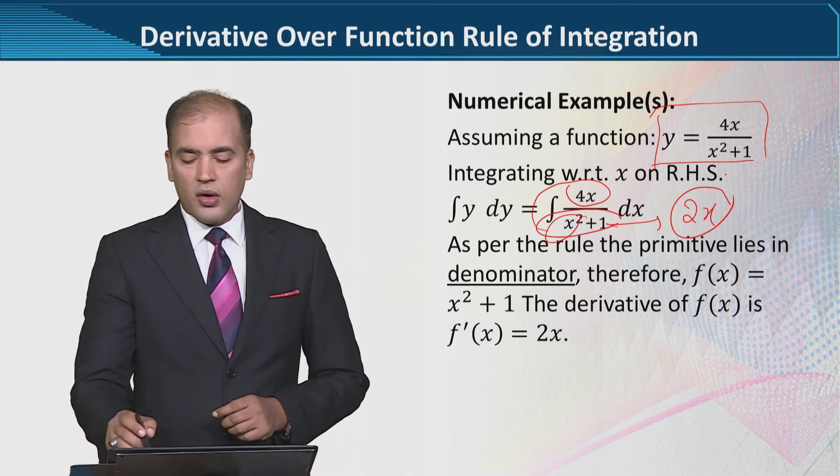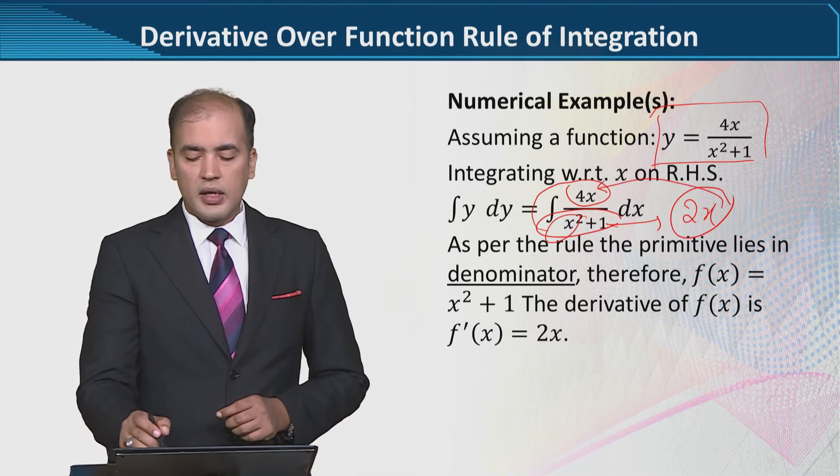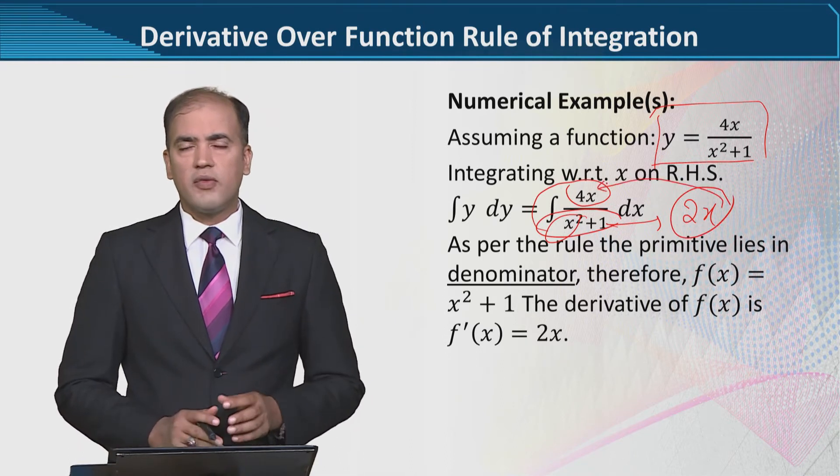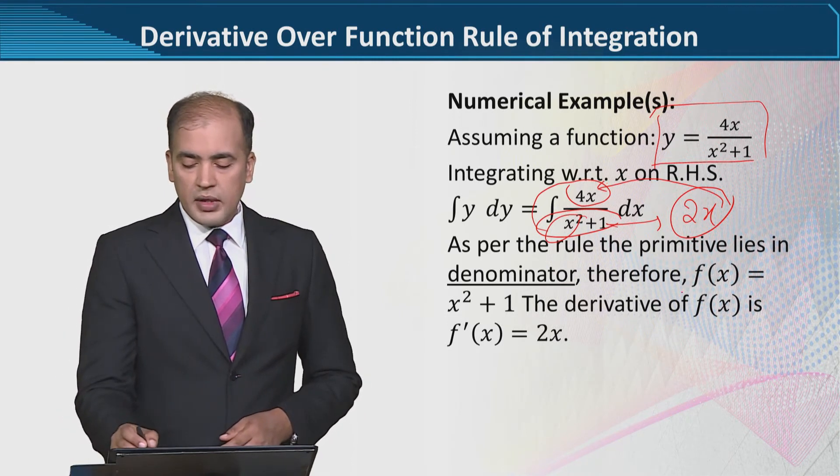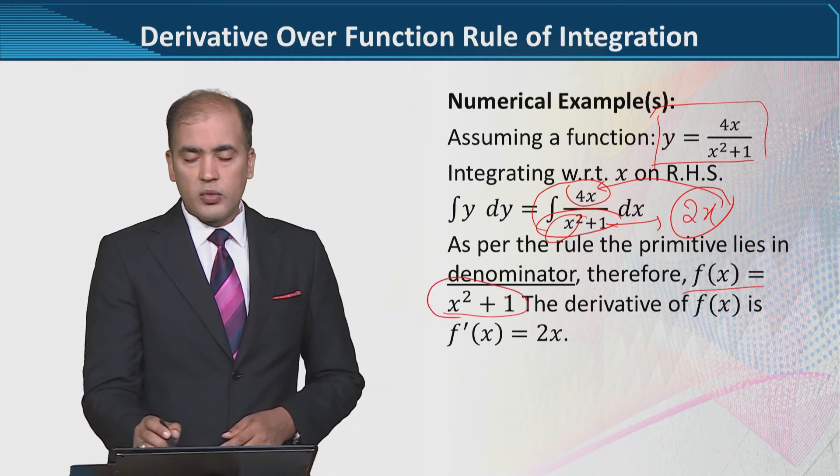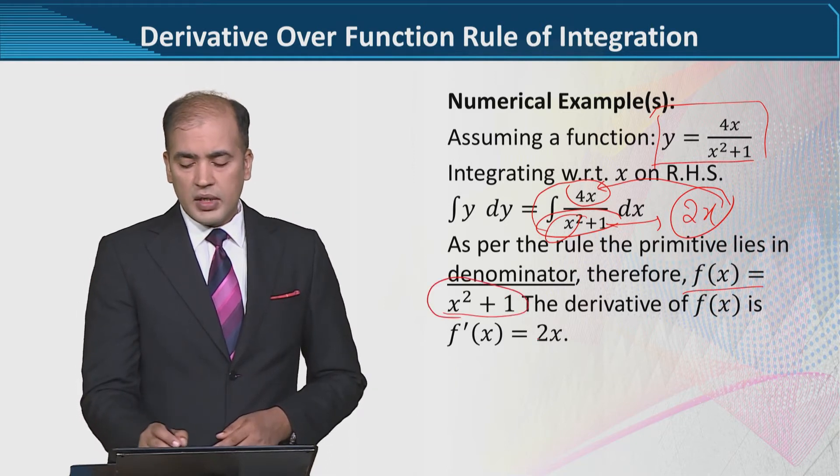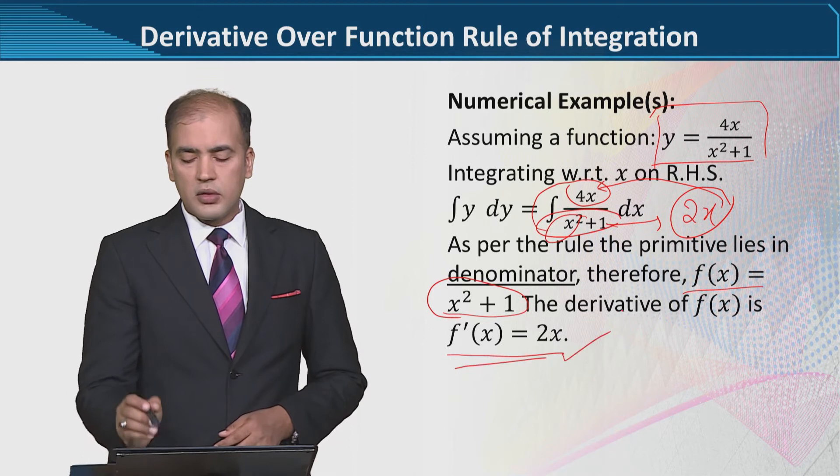So the main problem is resolved—the derivative that will come is 2x, and x to the power 1 exists in the numerator, so we can apply this rule here. Now in its details, f(x) we've said is this as I've already told you, and its derivative I've calculated which is 2x.